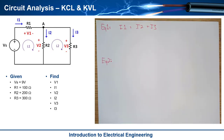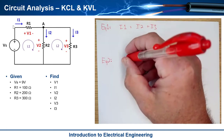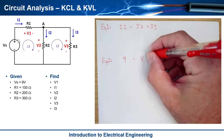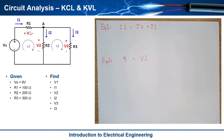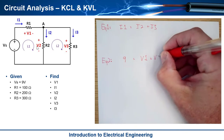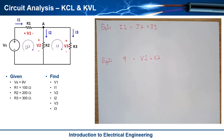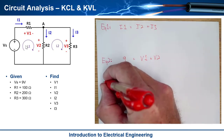Equation 2 is KVL around Loop 1, going clockwise. The sum of voltage rises equals the sum of voltage drops. Starting at the bottom node: the source VS goes from minus to plus — a rise of 9 volts. Then V1 is a drop, and V2 is a drop. So Equation 2 is: 9 = V1 + V2.